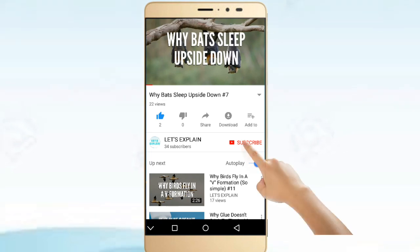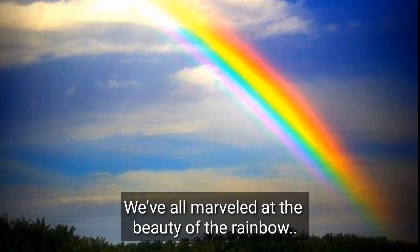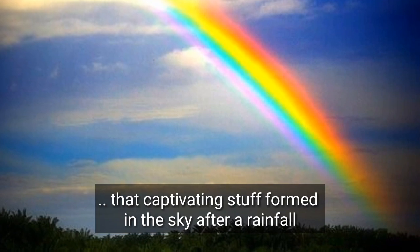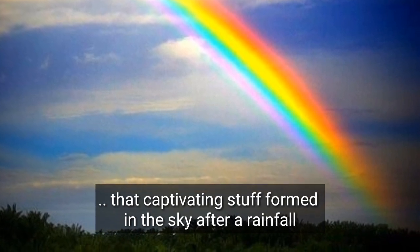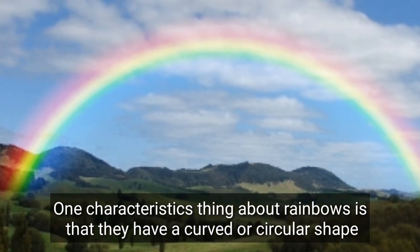Click the subscribe button so you don't miss tomorrow's big explanation. We've all marveled at the beauty of the rainbow, that captivating stuff formed in the sky after a rainfall. One characteristic thing about rainbows is that they have a curved or circular shape.